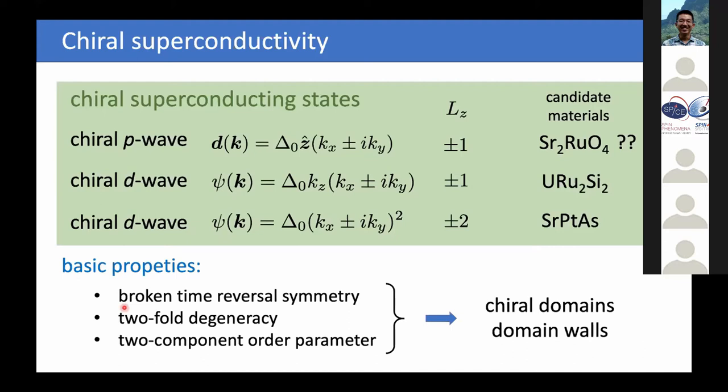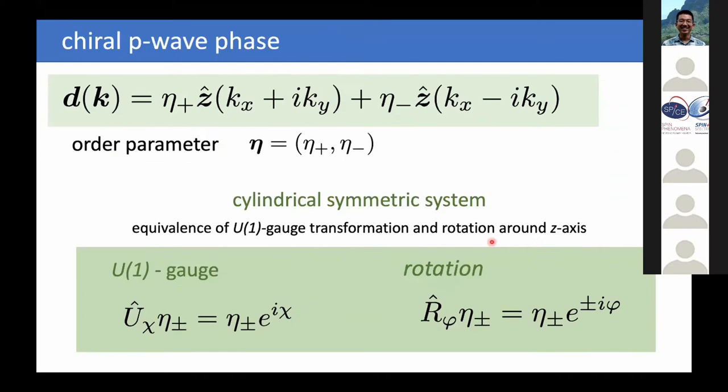These states break time reversal symmetry, so they are two-fold degenerate and have two-component order parameters. Due to this degeneracy, we can have domain formation and domain walls — so-called chiral domains.